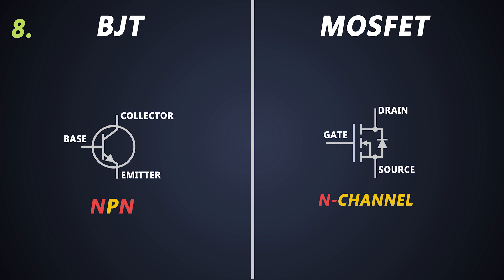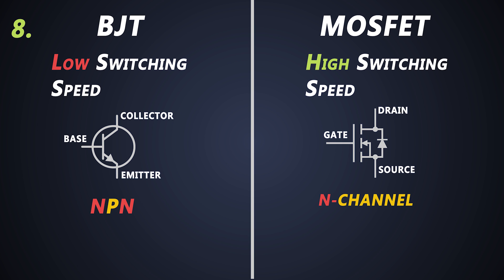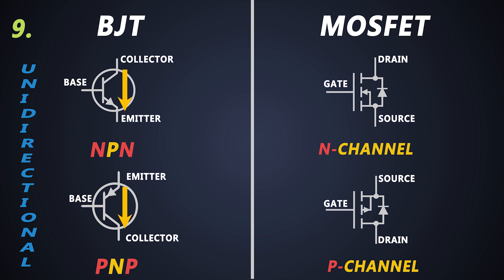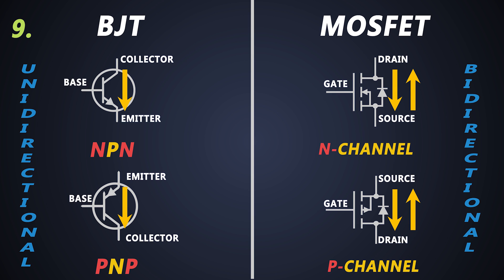The switching speed of the BJT is very low, but the MOSFET switching speed is very high. Last but not least, the BJT is a unidirectional device — for an NPN BJT, current can only flow from Collector to Emitter, and for a PNP transistor, it flows from Emitter to Collector only. But MOSFET is a bidirectional device; current can flow in both directions, that is from Drain to Source or from Source to Drain, in both N-channel and P-channel MOSFETs.